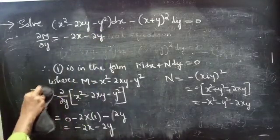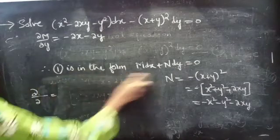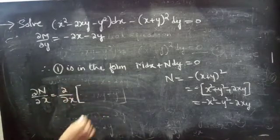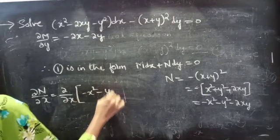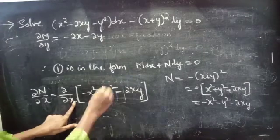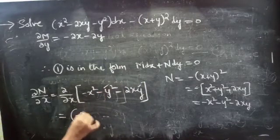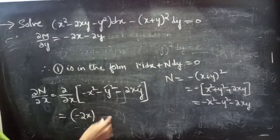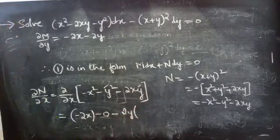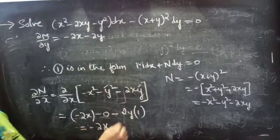Now we find ∂N/∂x. N equals minus x squared minus y squared minus 2xy, and we take the partial derivative with respect to x, treating y as constant. The derivative of minus x squared is minus 2x, the derivative of minus y squared is 0, and minus 2y times x gives minus 2y. So ∂N/∂x equals minus 2x minus 2y.